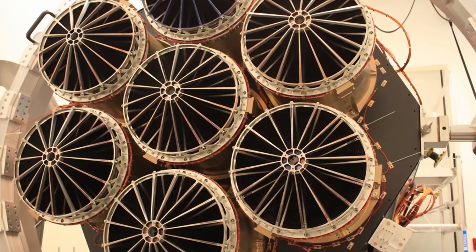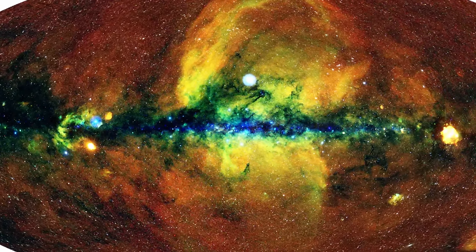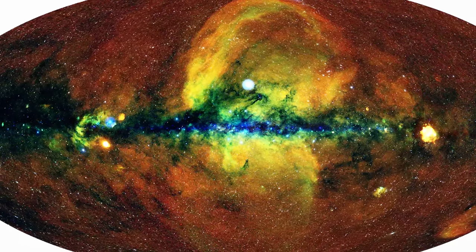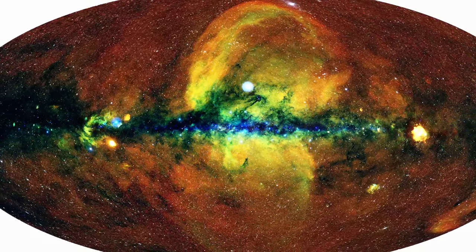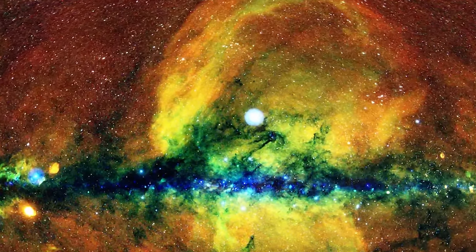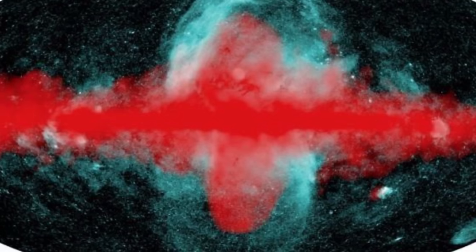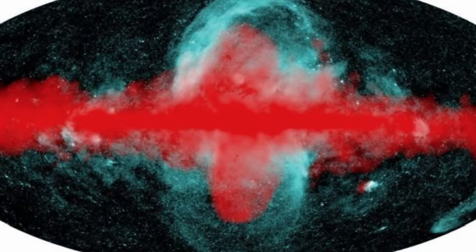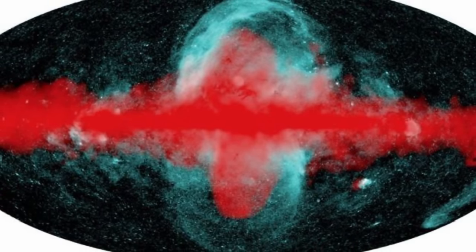By looking in the x-rays, it discovered two more bubbles that were somewhat similar in shape and to some extent somewhat similar in the appearance, but much bigger and much more energetic. And when observed together, they sort of look like this. The bubbles in red are Fermi, the bubbles in blue are Erosita. So that's x-rays and gamma rays.